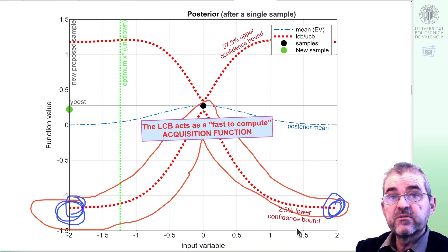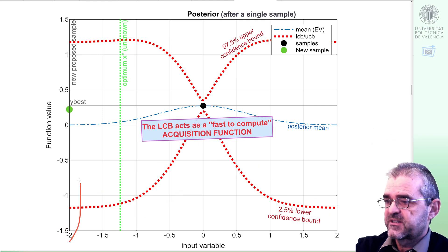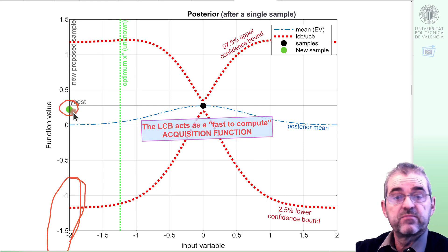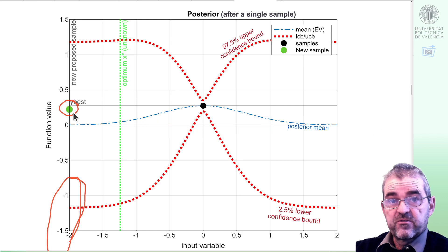So the thing is, this heuristics is fast to compute. The lowest confidence bound in red tells me that 1 in 40 times, 2.5%, the function may be that low. And it's kind of a risky heuristics in the sense that I will not get that low. But okay, let's explore because maybe I am very lucky. Like when you buy a lottery ticket saying that, okay, I will not get millionaire, but well, let's try just in case. So in this case, the algorithm proposes sampling here and the true function plus minus some measurement noise ends up providing this sample.